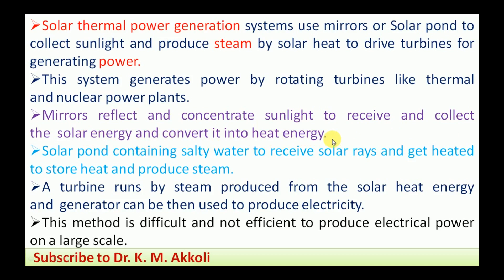Mirrors reflect and concentrate sunlight to collect solar energy and convert it into heat. The solar pond containing salty water receives solar rays and gets heated to store heat and produce steam. Salty water has the capacity to hold heat — unlike normal water, which releases heat to the atmosphere, salty water retains it. This stored heat can be used for steam generation.